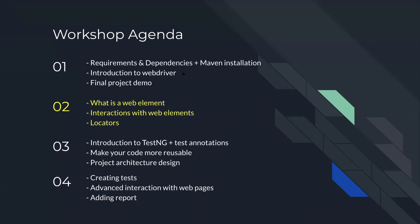In the previous meetup we started with the basic installation, the requirements and dependencies, the maven installation, we were introduced to selenium web driver and we also saw the final project demo. In this meeting we'll study what is a web element, we'll learn how to interact with it and we'll study about selenium locators. In the next meeting we'll introduce TestNG and test annotation, we'll make your code more reusable and we'll talk about the project architecture and design. While in the last meetup we'll create our tests, we'll study some advanced interaction with web pages and we'll also add the report.